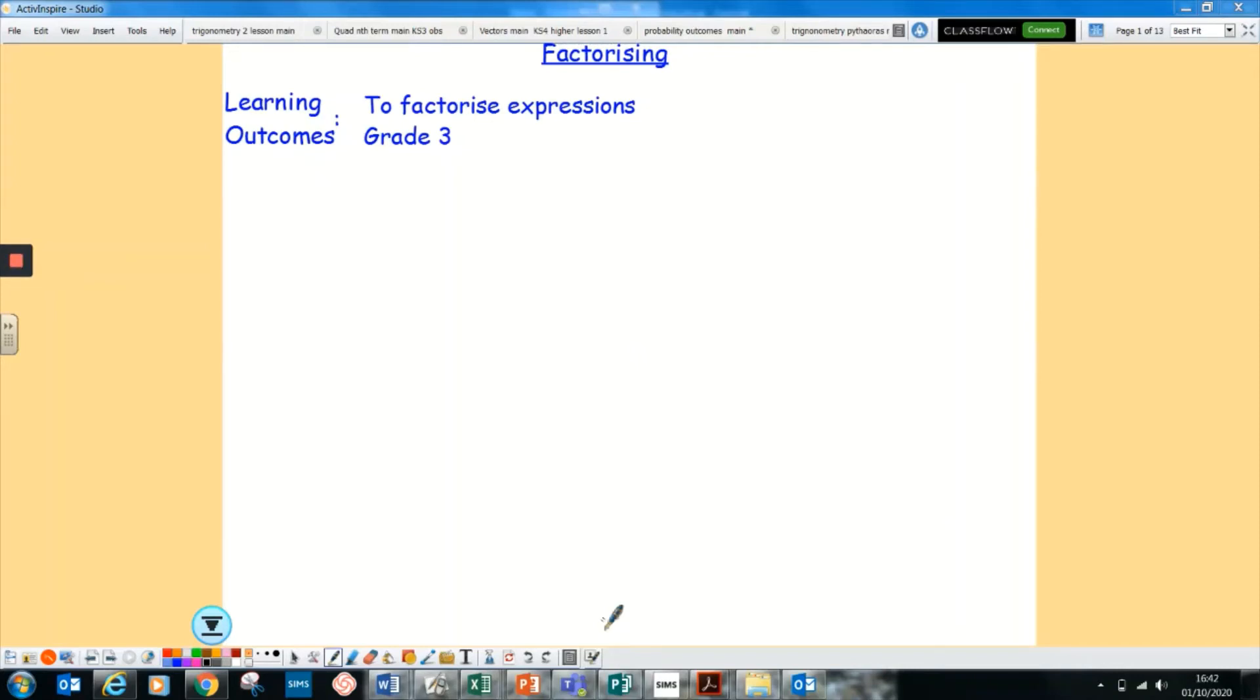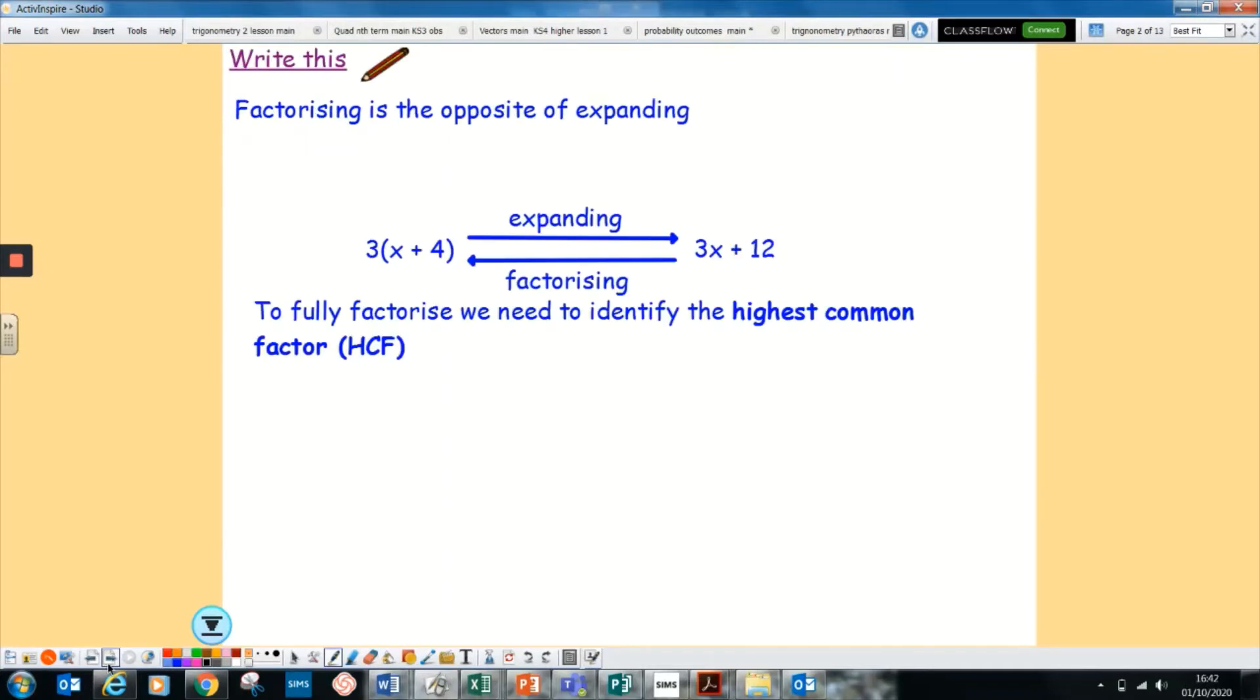Hi, this is a lesson on how to factorise expressions. Factorising is the opposite of expanding. As you can see here, if you expanded 3(x + 4), you get 3x + 12. Factorising is the opposite, putting it back into the brackets. To fully factorise, you need to make sure you've picked the highest common factor in the expression to make sure it is fully factorised.